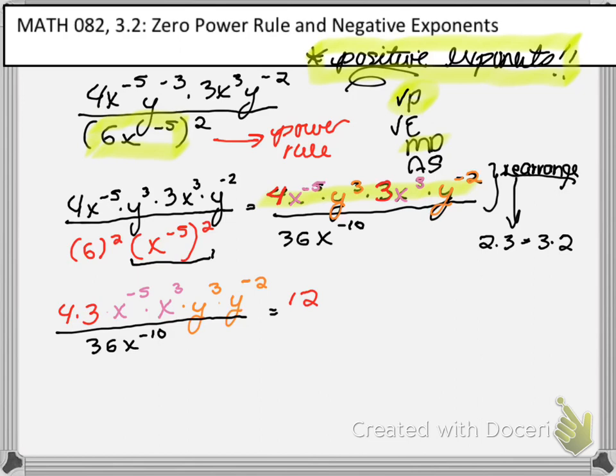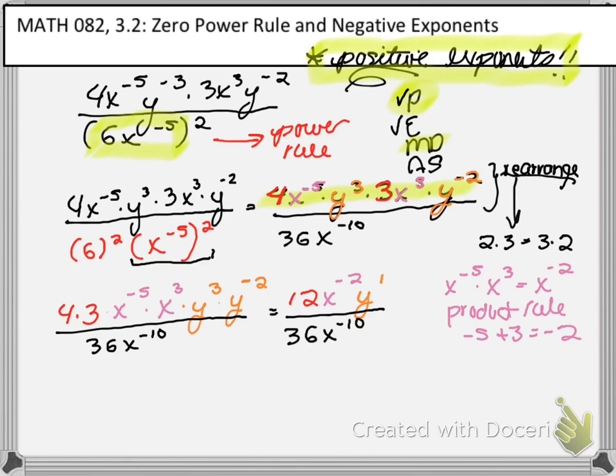Then we have x to the negative fifth times x to the positive third. Think about it, this is the product rule. The product rule says that we must add these exponents. Negative 5 plus 3 is negative 2. So this is going to give us x to the negative second power. Likewise, we're going to apply the product rule here. 3 plus negative 2 or 3 minus 2 is 1. And you guys can decide whether you want to write that exponent one there or not, totally up to you.